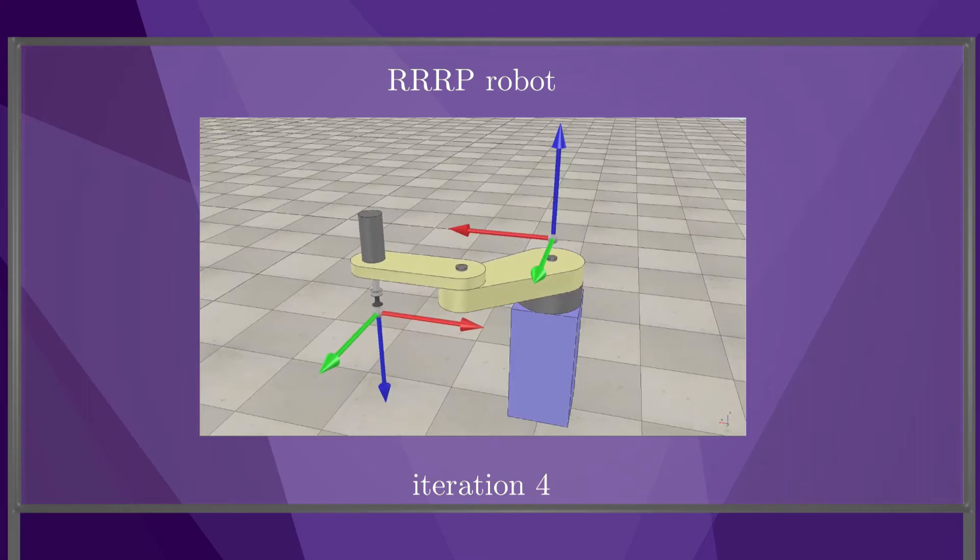After four iterations, the remaining configuration error is imperceptible, and the numerical inverse kinematics algorithm has converged to a good solution.